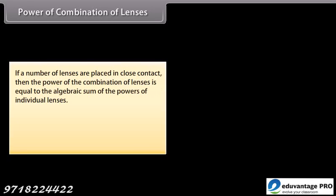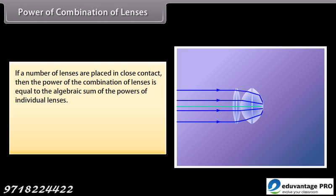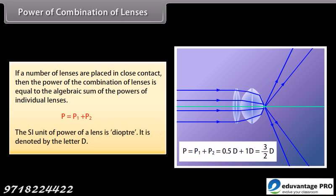Power of combination of lenses: if a number of lenses are placed in close contact, then the power of the combination is equal to the algebraic sum of the powers of the individual lenses: P = P1 + P2. The SI unit of power of a lens is the diopter, denoted by D.